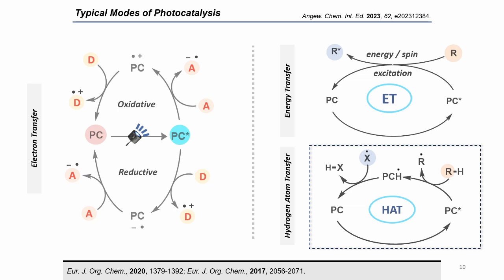The mode of photocatalysis I am majorly working on is hydrogen atom transfer (HAT) mediated C–H activation. In this case, the excited photocatalyst transfers a hydrogen atom from a suitable substrate, generates an active radical species in the reaction medium, and returns to its ground state via HAT. This is a very special mode of photocatalysis because it does not require any functional group to activate the substrate — only a suitable hydrogen atom donor or acceptor.